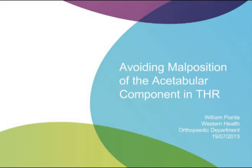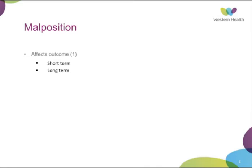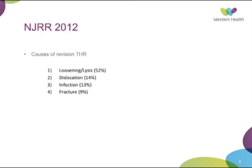We're talking today about acetabular positioning and avoiding malposition in total hip replacements. We want to avoid malposition of the acetabular component because it has short and long-term implications due to changed biomechanics of the hip — point loading if the acetabular component is too abducted or open, which leads to polyethylene wear. The extreme of that is instability and dislocation. The National Joint Registry shows revision causes are loosening and lysis, accounting for half, and dislocation at 14%, with some loosening potentially resulting from acetabular malposition and polyethylene wear debris.